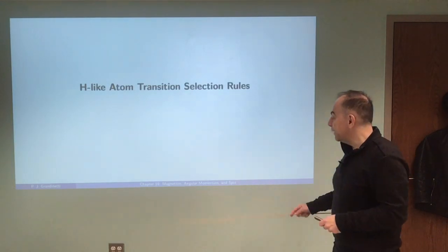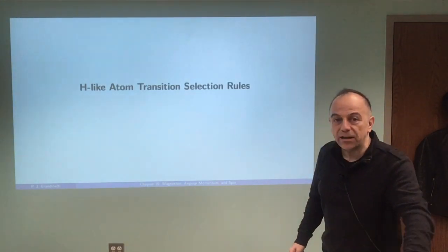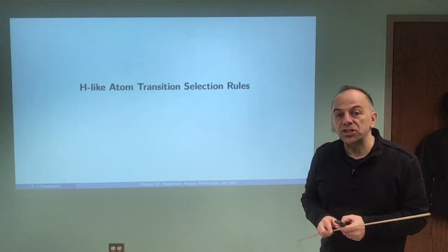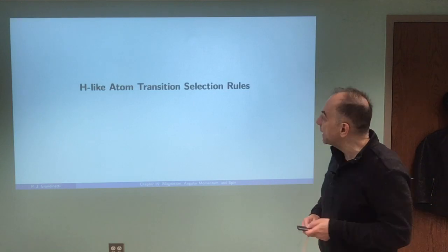Welcome back to CHEM 4300. In this video we finished up chapter 19 on magnetism, angular momentum, and spin. And now we're going to look at the transition selection rules for the hydrogen-like atom.